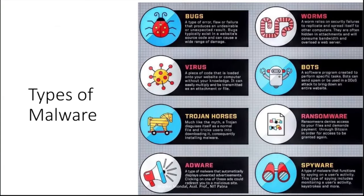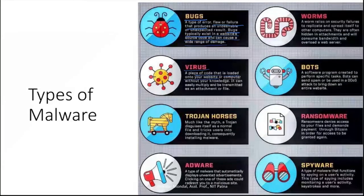There are different kinds of malware. A bug is a type of error, flaw, or failure that produces an undesirable or unexpected result. Bugs typically exist in website source code and can cause a wide range of damage. A virus is a piece of code loaded onto your computer without your knowledge that can multiply and be transmitted as an attachment.